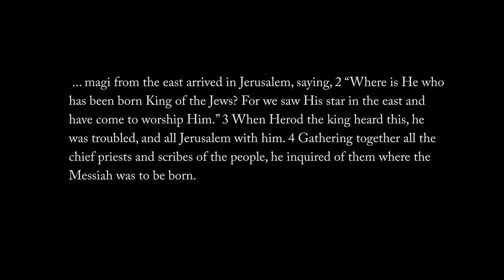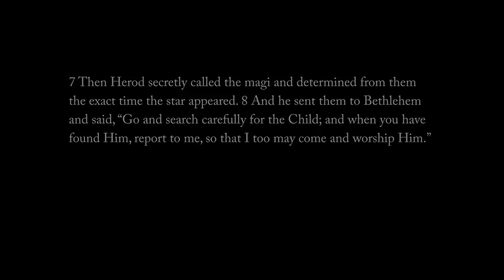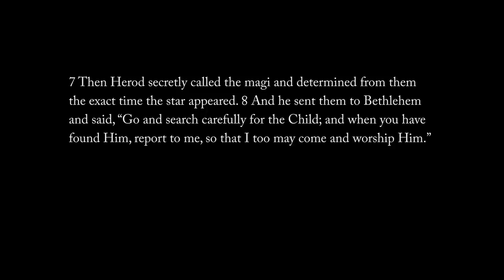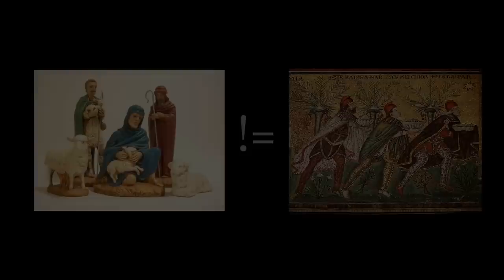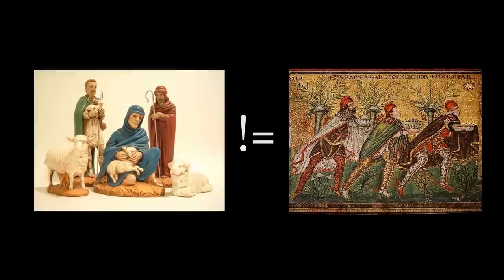Matthew goes on to describe Magi from the east arriving in Jerusalem, asking where the king of the Jews has been born. They cite a prophecy, then Herod secretly calls the Magi and determines from them the exact time the star appeared, sending them to Bethlehem, saying: 'Go and search carefully for the child, and when you have found him, report to me so that I too may come and worship him.' I want to note that the Magi in Matthew are different from the shepherds in Luke — people tend to conflate them.